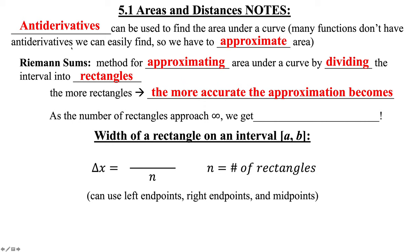The width of a rectangle on the closed interval from A to B — our change in X, or delta X — equals B minus A divided by the number of rectangles we want to use. We can use left endpoints, right endpoints, and midpoints. There's also another technique called trapezoids.